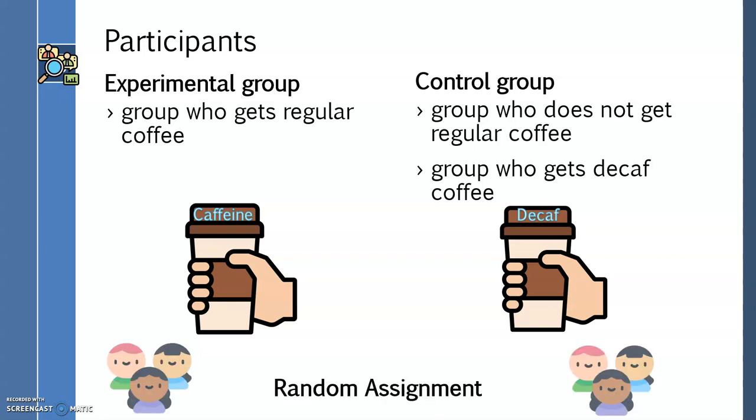So I need to randomly assign students to each group. That way, there is a better likelihood of representation of both high and low GPAs in each of our groups.